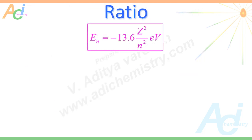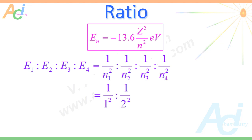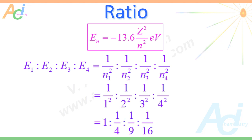Now let us see the ratio between the energies of the first four orbits. It is equal to 1/N₁² : 1/N₂² : 1/N₃² : 1/N₄², or equivalently 1 : 1/4 : 1/9 : 1/16. You can extend this ratio to the 5th, 6th, 7th orbit, and likewise.